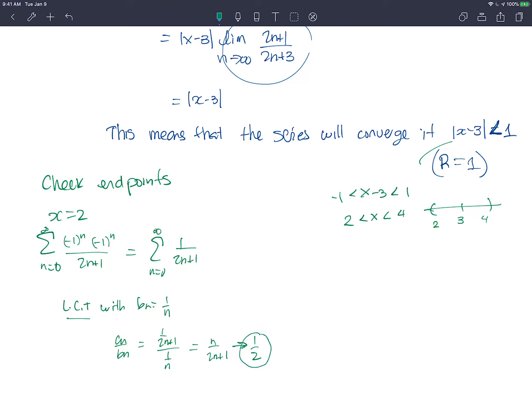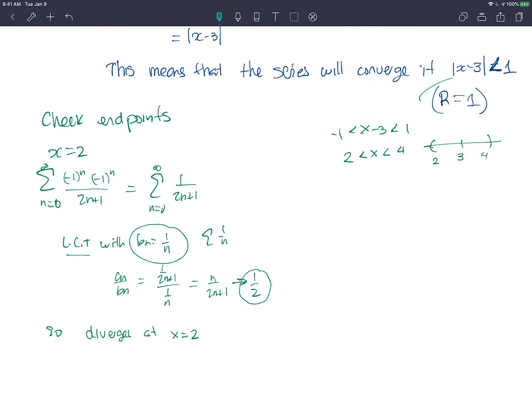And the limit comparison test told us that if you compare it with another sequence and you get a number, not 0, if the other series converges, your series converges, and if the series you compare it with diverges, it diverges. So here, this one, if you add the terms, it's a divergent series, so this one diverges. So this is divergent at x equals 2 using the limit comparison test with 1 over n.